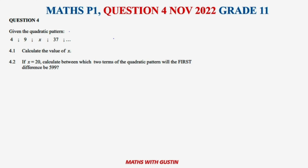At 4.1 we are given a quadratic pattern. When they say quadratic pattern, the first thing that comes to mind is that you have terms T1, T2, T3, and T4. You calculate T2 minus T1, T3 minus T2, and T4 minus T3 to get the first differences, and then you subtract those to get the common difference. That's how you deal with this one.